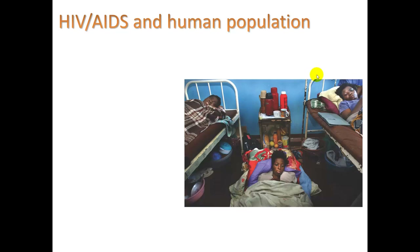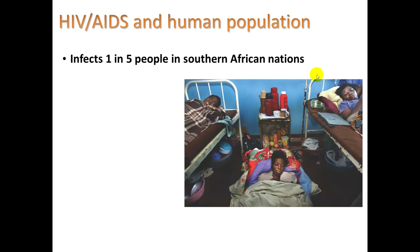So the last thing we'll take a look at is HIV and AIDS in human population. AIDS is a significant problem primarily on the African continent. In fact, one in five people in southern African nations are infected.